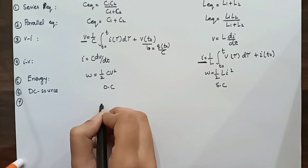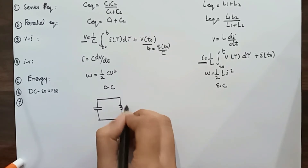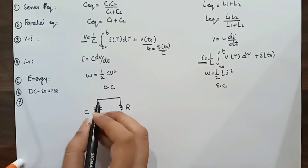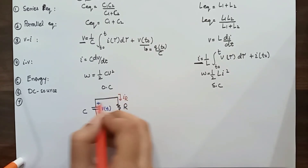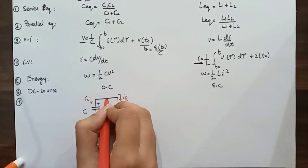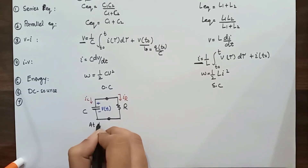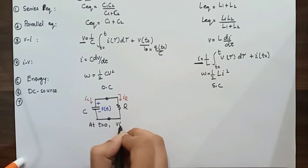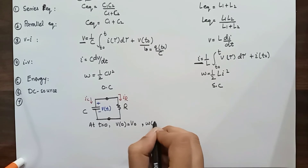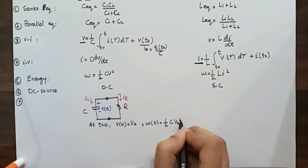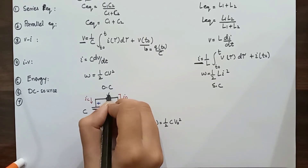Now let's see the behavior of a capacitor when no independent source is connected across it. Consider a capacitor C connected in series with a resistor. The capacitor is initially charged, so the voltage across it is v(t) and the current through the resistor is iR and through the capacitor is iC. At time t = 0, the initial voltage v(0) = V₀, and the stored energy = (1/2) × C × V₀².